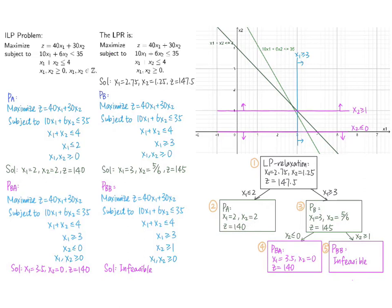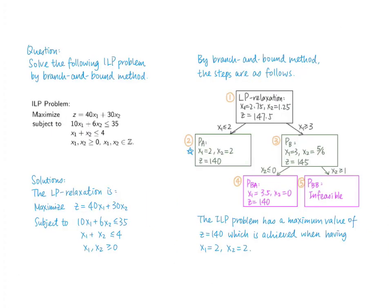Thus, (2, 2) is the optimal point for the ILP problem, and the maximum value is z equals 140. To summarize, by the branch and bound method, the ILP problem has a maximum value of z equals 140, achieved at x1 equals 2, x2 equals 2. The tree diagram shows the process and solutions obtained at each stage, with orange numbers indicating the sequence of handling the subproblems.